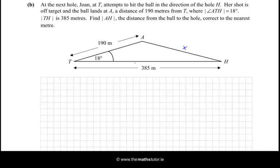So, we look at page 16 of the tables, and we see the cosine rule, and we know the angle 18, so the side opposite it is X, so that's going to be the first thing in our formula. So, X² is going to be 190² plus 385² minus 2 times 190 times 385 times cosine of the angle we know, which is 18.